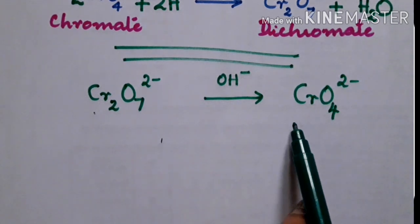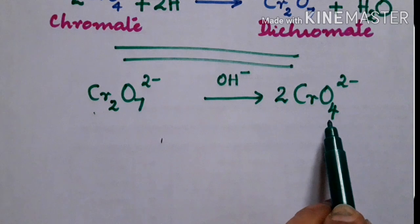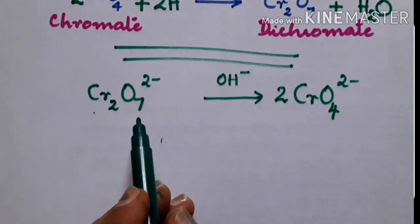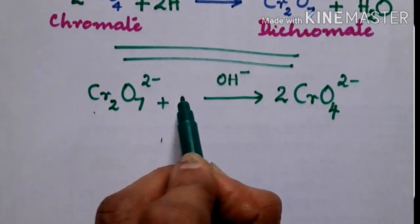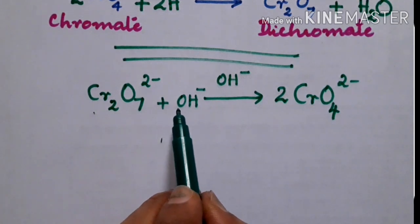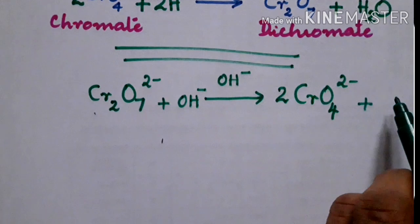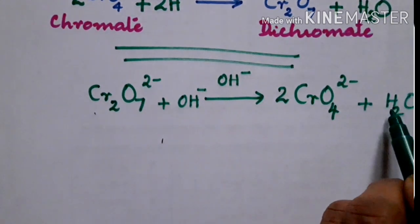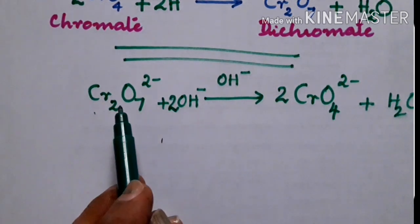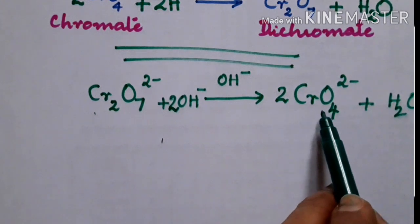To balance this equation: there are two chromiums on the left but only one on the right, so make it two. Total oxygens on the right become eight but only seven are on the left. Since it is in basic medium, add OH- on the left side. Adding one OH gives only one hydrogen, but the right side needs two, so make it two OH-. Total oxygens then become nine on both sides.